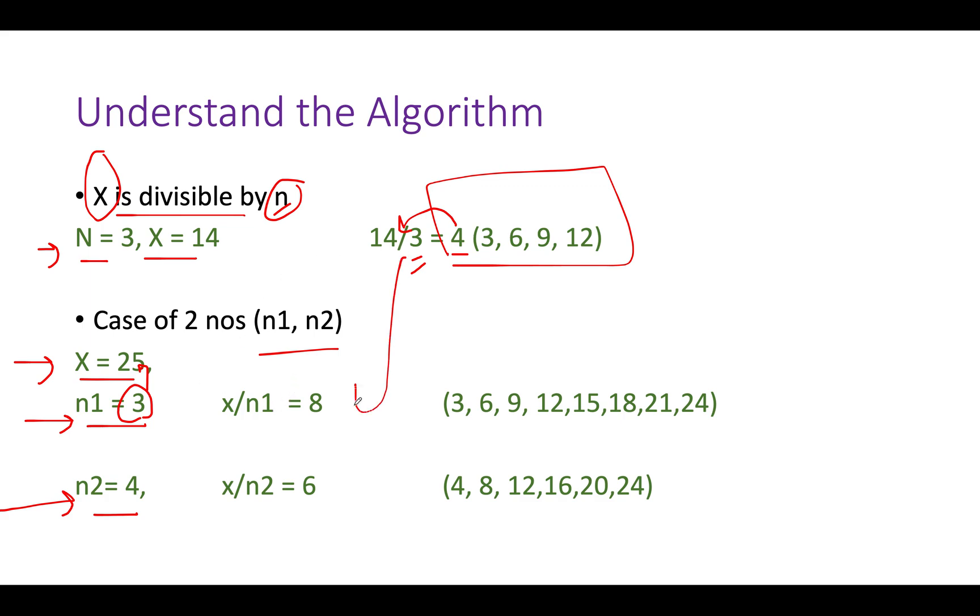Let's assume x is given as 25, n1 is 3, n2 is 4. Let's create the series of all factors of 3 up till x. We divide x by n1 and get 8. There would be 8 elements: 3, 6, 9, 12, 15, 18, 21, 24. Let's do the same for n2: 25 by 4 is 6, giving us 4, 8, 12, 16, 20, and 24.